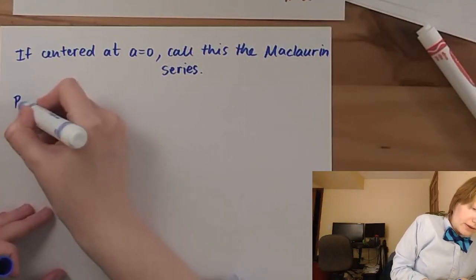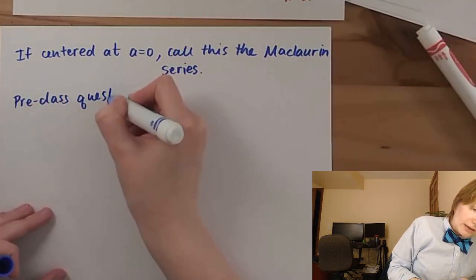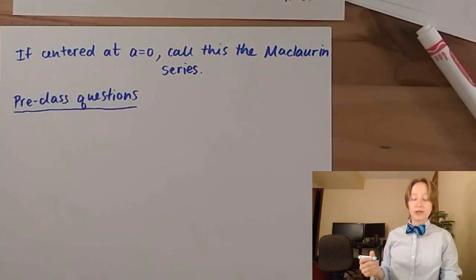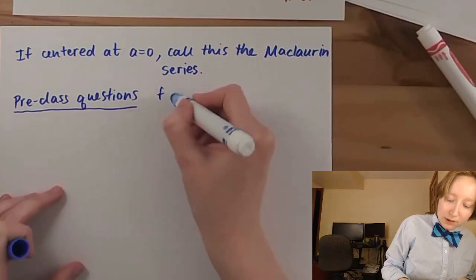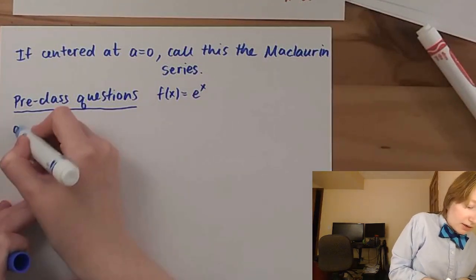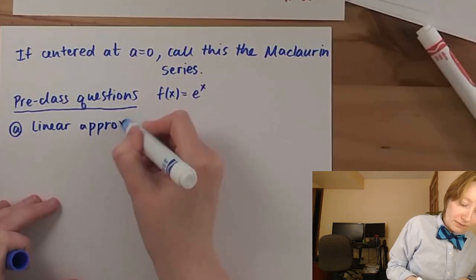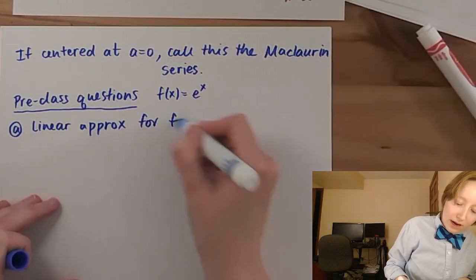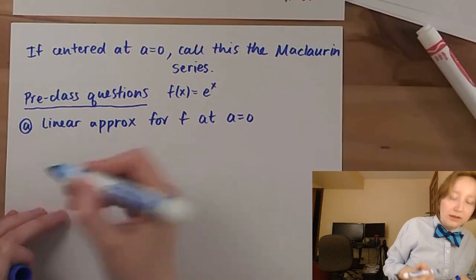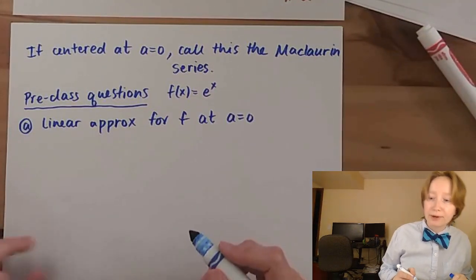With this in mind, let's talk about the pre-class questions and then we'll take a look at error and do another example. For the pre-class questions, the function I'm looking at is the exponential e^x. In part a, I'm looking at the linear approximation for f at a equals 0, meaning I'm going up to x to the first power.